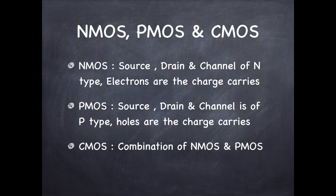Then we have NMOS, PMOS and CMOS. Basically when we have source, drain and channel they are of N types and electrons are the charge carriers, we call it N type of MOSFET, N channel MOSFET.